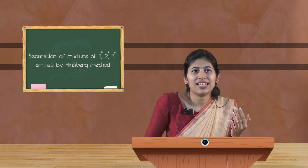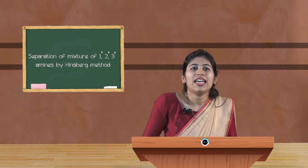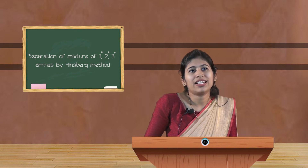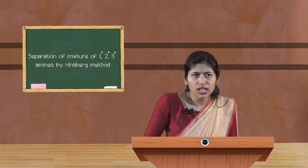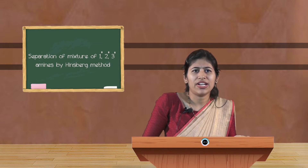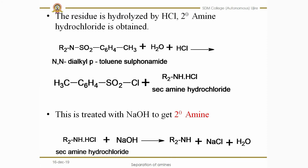The remaining residue in the round-bottom flask is the secondary amine product. When this residue is hydrolyzed with HCl, we get the secondary amine hydrochloride. Then, when it is treated with sodium hydroxide in a second step, we get the pure secondary amine.